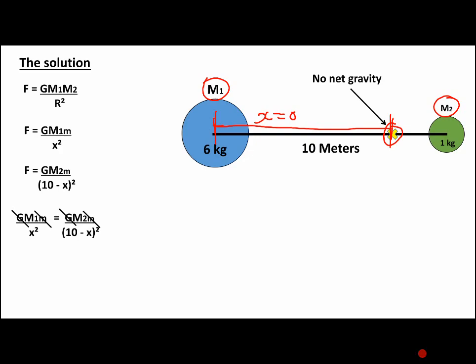The next thing we do is to put them like that. So that's what we now have: M1 over X squared equals M2 divided by 10 minus X squared.